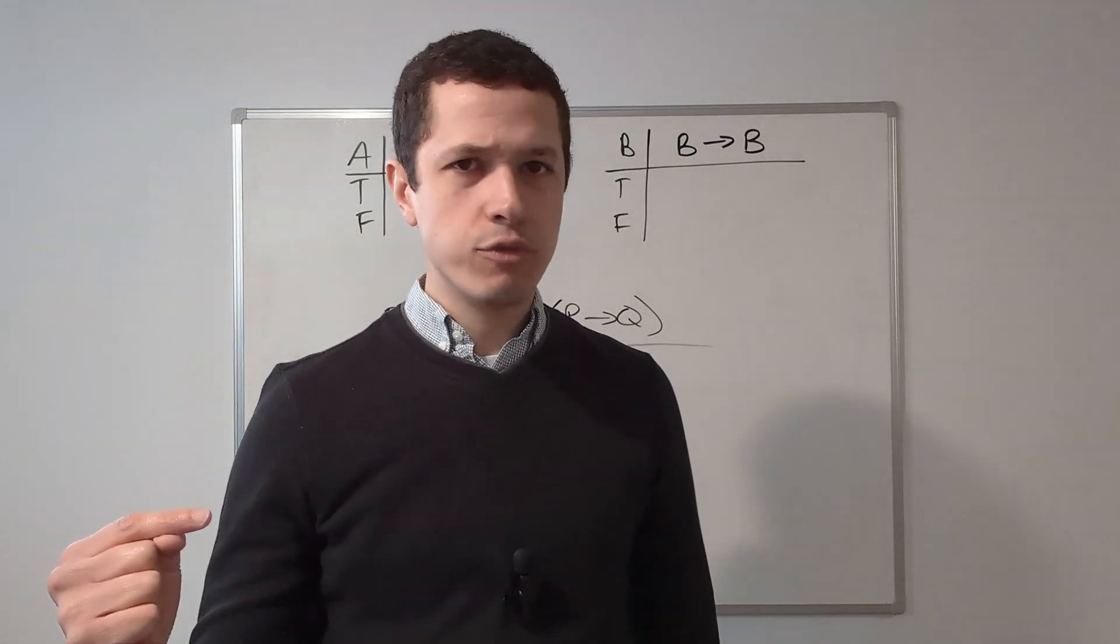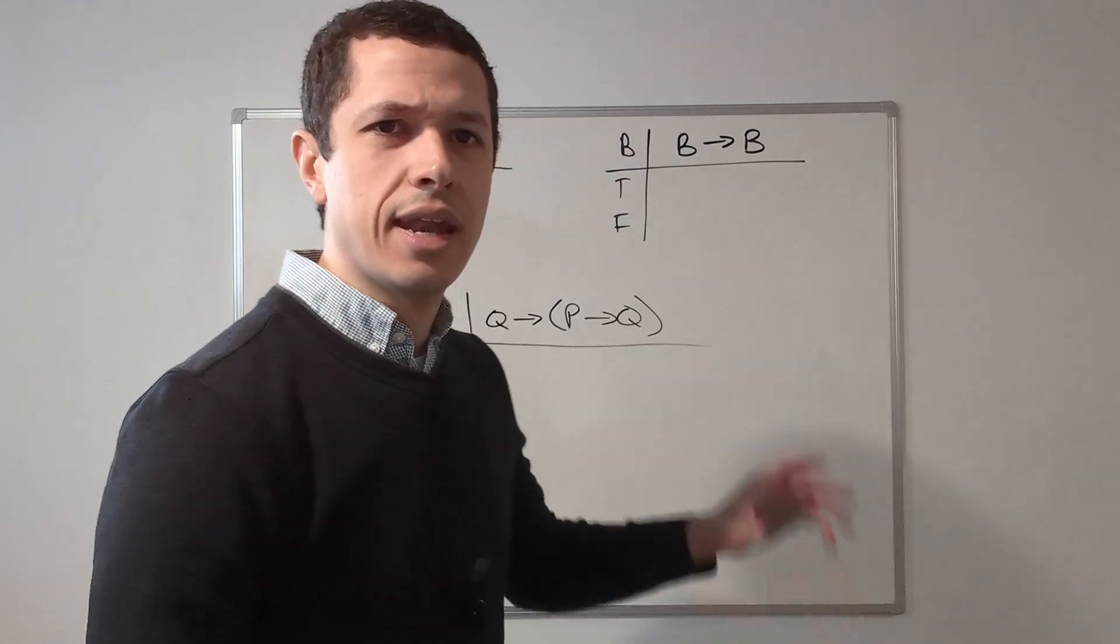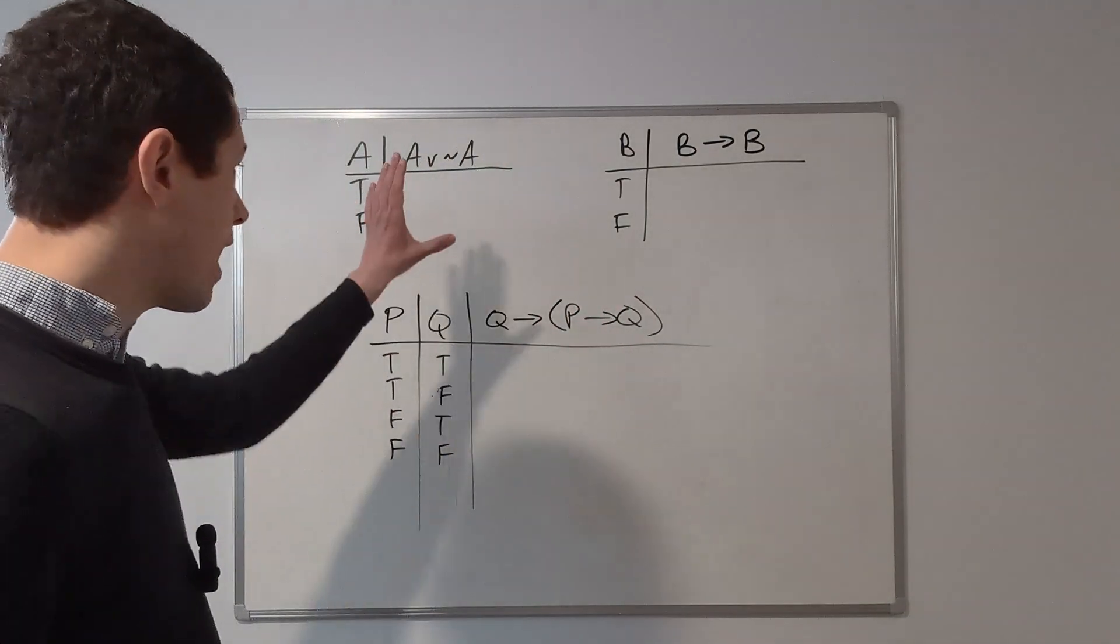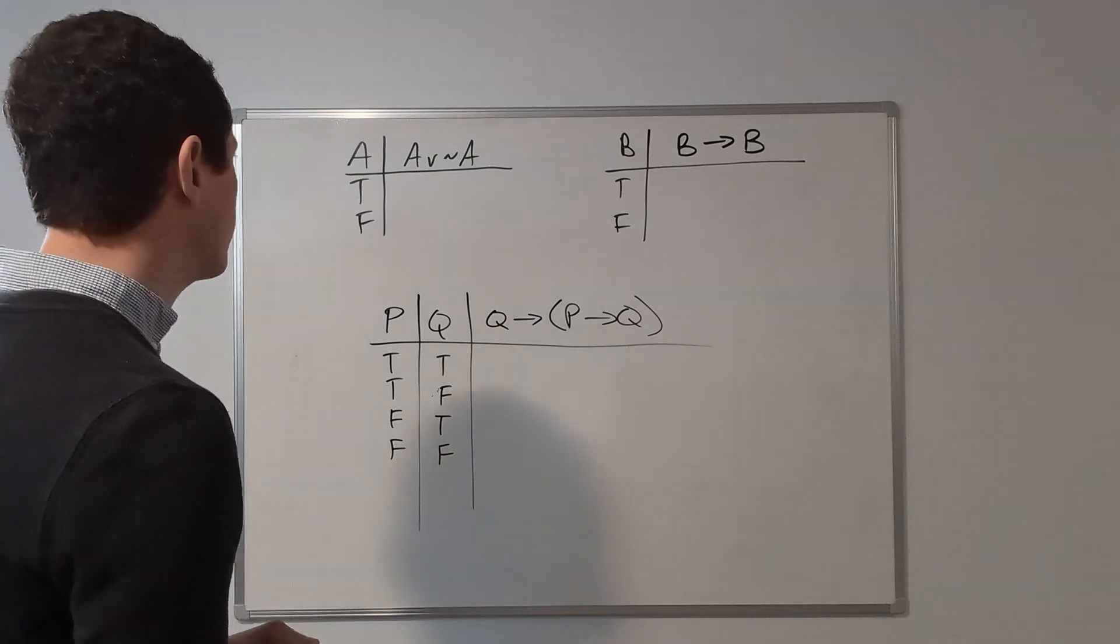So if you have a statement that has true for every row, that's a tautology. If you have a statement that doesn't have true for every row, then that's not a tautology. And we'll start off with the really basic ones that I have up here, although none of these get particularly complicated.